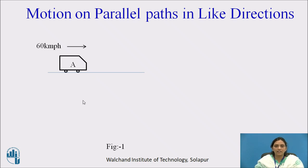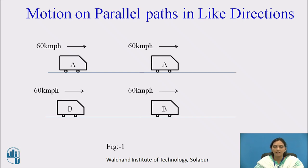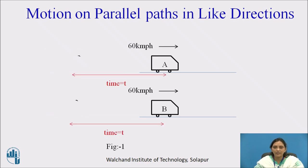Let us see it diagrammatically. Here, there is a vehicle A moving with a velocity of 60 kilometers per hour. On the parallel track, vehicle B is moving with the same velocity of 60 kilometers per hour. As the velocity of both vehicles is the same, after time t they will reach the same position, and the observer in vehicle A will think that B is not moving or is at rest.